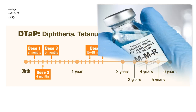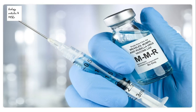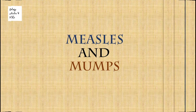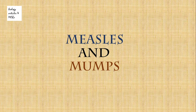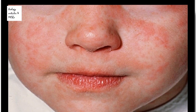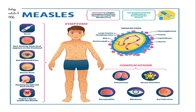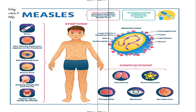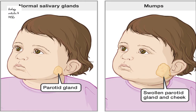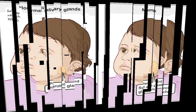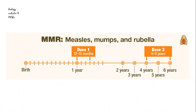The next important vaccine is MMR, used for measles and mumps. Measles is a highly contagious disease with symptoms including fever, a runny nose, white spots in the back of the mouth, and a rash. Mumps can cause headache, fever, and swollen salivary glands. Children should get vaccinated at twelve to fifteen months, with a second dose at four to six years old.